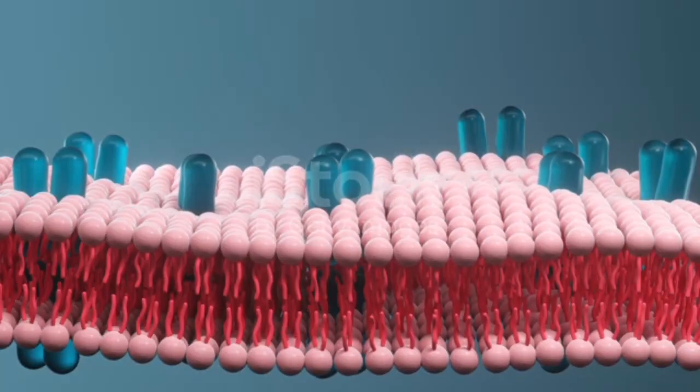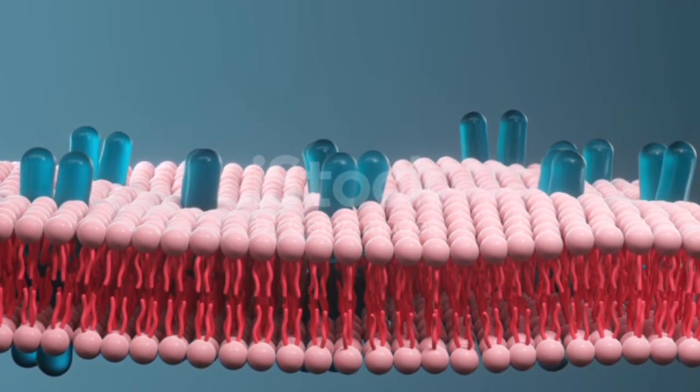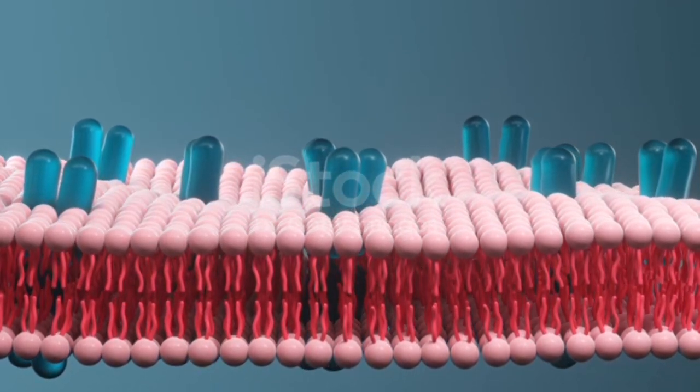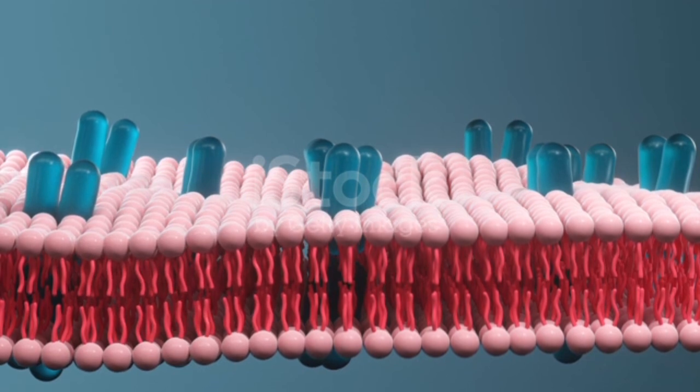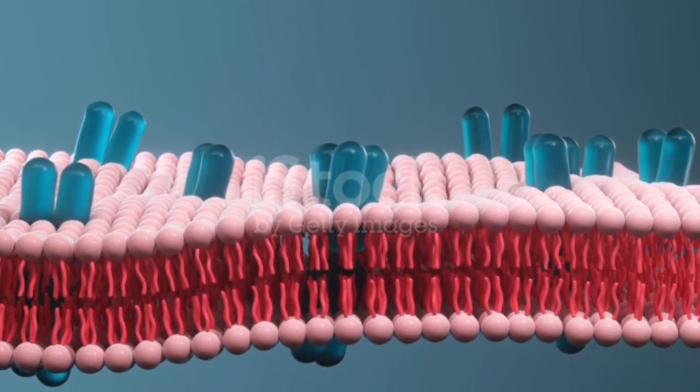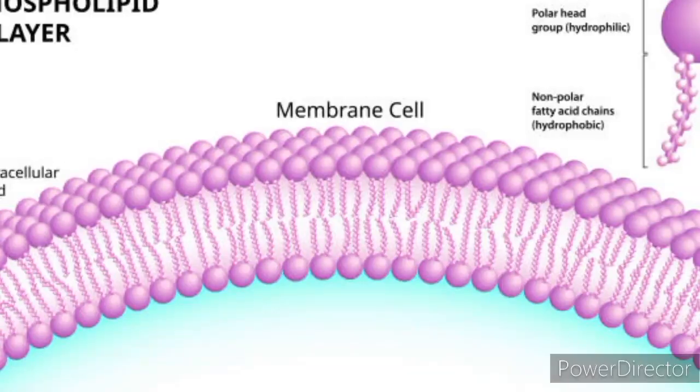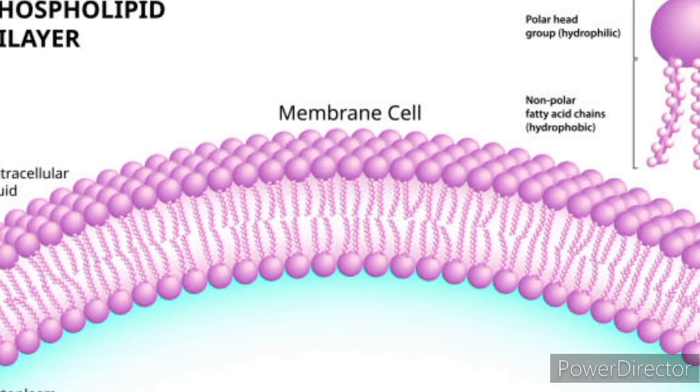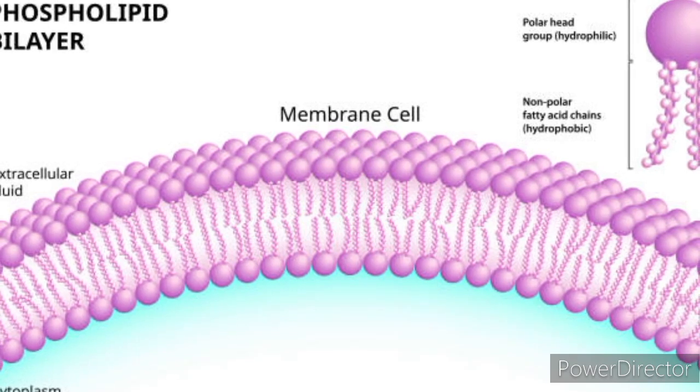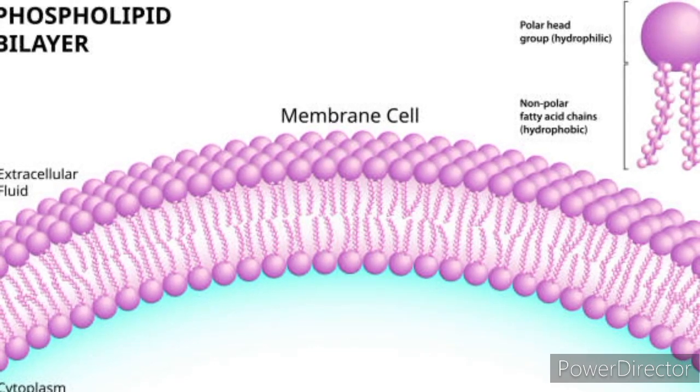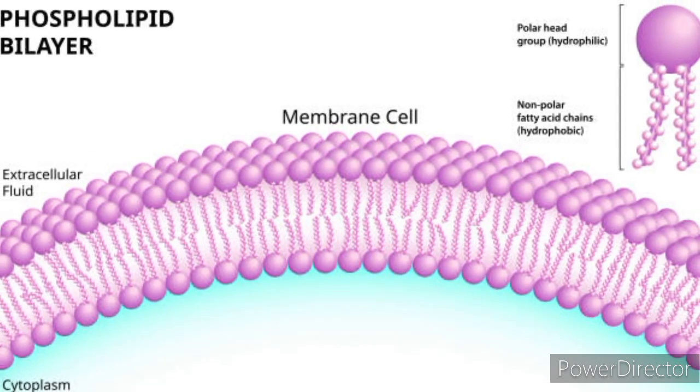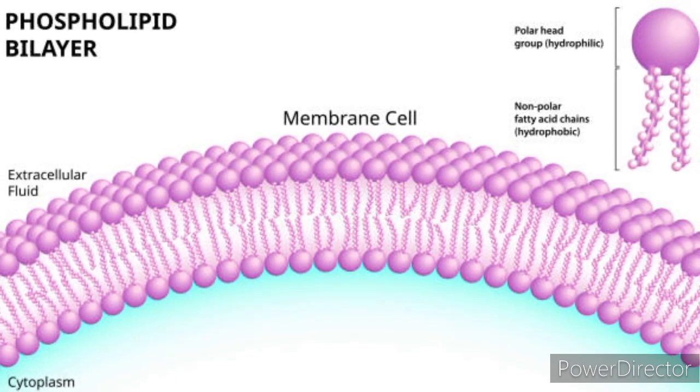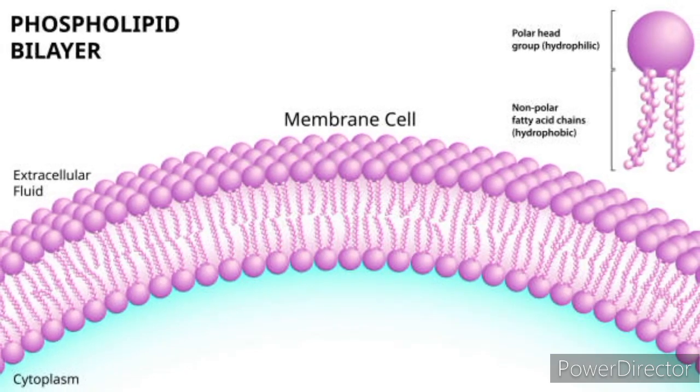Lipid bilayer composition: The phospholipids in the membrane are amphipathic, having a hydrophilic (water-attracting) head and hydrophobic (water-repelling) tails. This arrangement results in the bilayer structure, with the hydrophobic tails facing inward and the hydrophilic heads facing outward towards the aqueous environments inside and outside the cell.